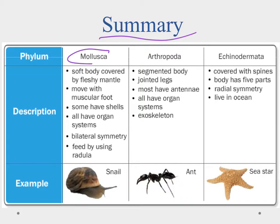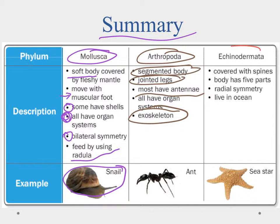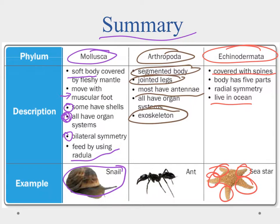In summary of the last three phyla: the Mollusca — snails, octopus — have a soft body covered by a fleshy mantle, move with a muscular foot, some have shells, all organ systems present, bilateral symmetry, and feed with a radula. The arthropods have a segmented body, jointed legs, most have antennae showing increased use of senses, and an exoskeleton that they shed as they grow. The Echinodermata are spiny-skinned organisms with five-part radial symmetry — all living in the ocean — as we can see in our sea star. That's it for the invertebrates. Good luck on the lessons and we'll see you in the next video.